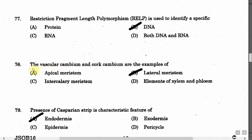The next question is: The vascular cambium and cork cambium are examples of — Option A: Apical meristem. Option B: Lateral meristem. Option C: Intercalary meristem. Option D: Elements of Xylem and Phloem. The correct answer is Option B, that is Lateral meristem.